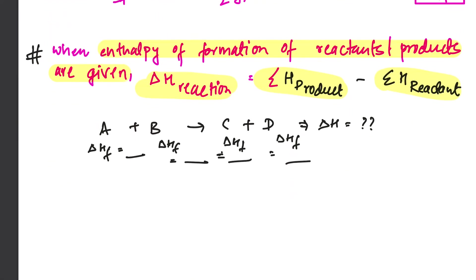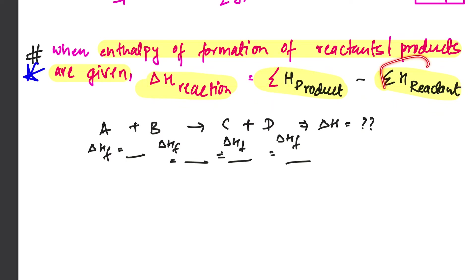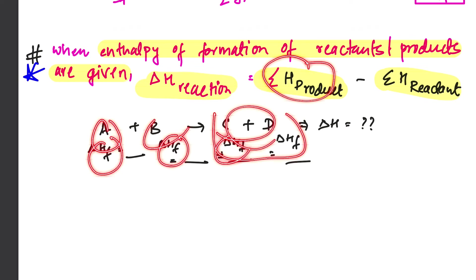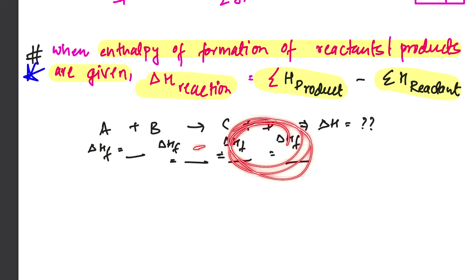Another important thing is to think about the numerical method. If you think about the product or reactant reaction, the enthalpy of reaction is the summation of the enthalpy of all the product side minus the summation of the enthalpy of all the reactants. The reaction is A + B → C + D. This is the enthalpy of formation formula.